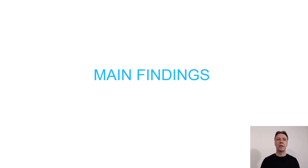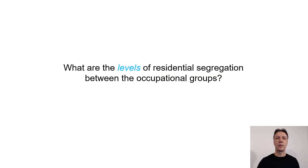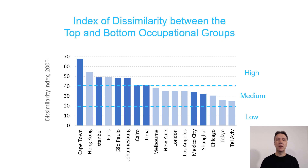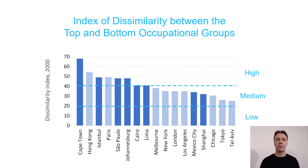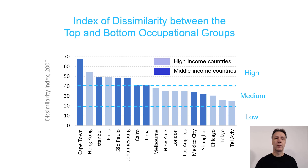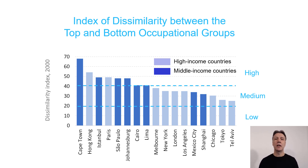Let us see the main findings by answering two subsidiary questions. First, what are the levels of residential segregation between occupational groups? From this graph, within our pool of cities there is nowhere a segregation level below the value of 20, meaning that all cities are either medium or highly segregated. The most segregated city is Cape Town, and the least segregated is Tel Aviv. We also see a distribution across income levels: segregation levels tend to be higher in lower- or middle-income countries, based on World Bank classification, and lower in high-income countries.